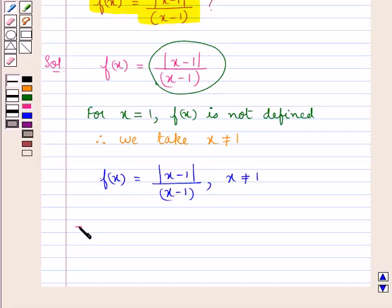Let us now define this function f(x). Since x ≠ 1, we have x > 1 or x < 1. For x > 1, this function f(x) is given by (x-1)/(x-1).